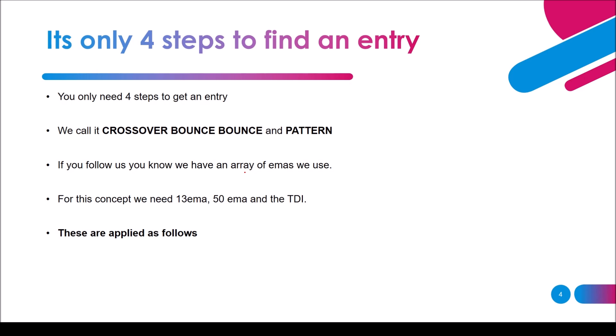It's only four steps to find an entry. You need four steps to get a point of market entry, and we call it crossover, bounce, bounce, and pattern. By crossover, bounce, bounce, and pattern, we are referring to exponential moving averages — or EMAs — applied to close. For this concept we need the 13 EMA, 50 EMA, and the TDI in some cases, but in most cases we won't need the TDI.